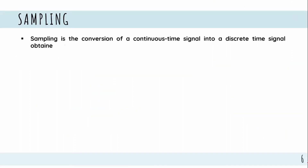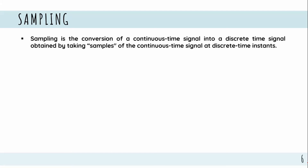Sampling is the conversion of a continuous time signal into a discrete time signal, obtained by taking samples of the continuous time signal at discrete time instances. We convert the analog signal to a discrete time signal, and this conversion process is called sampling.